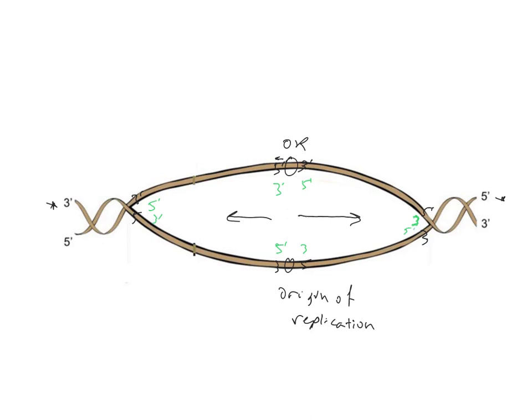DNA polymerase moves perfectly in the 5' to 3' direction. Looking at which new strands already have a 5' to 3' direction — those are the ones that work well, so once synthesis gets started it just keeps going. That makes these our leading strands. The bottom-left new strand is also moving 5' to 3' in the direction the origin of replication is expanding, so it is also a leading strand.